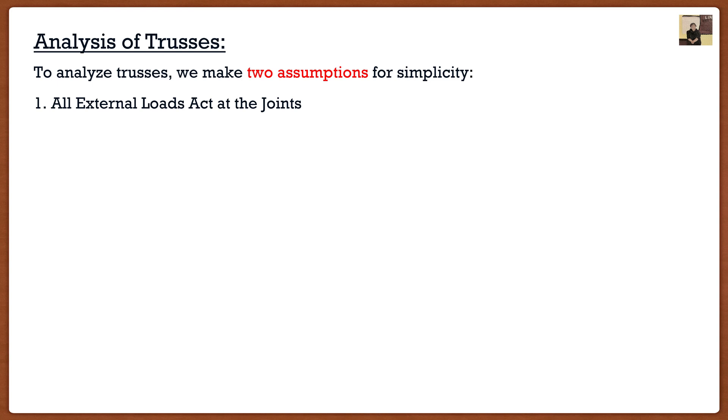The first one is that all external loads act at the joints. So if I have my nice truss structure like this and it has some loads, we can see that two of these loads at the very top act at a joint, so these are considered valid. However, if we look at the load on the left, it does not act at a joint, so we would not consider this case. All the loads that we deal with in this course always act at the joints of the truss, and as we're going to see, this is actually a very valid assumption.